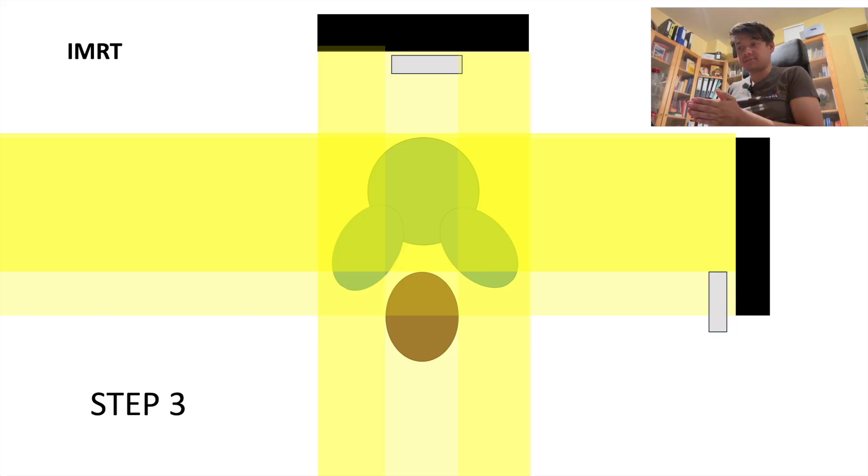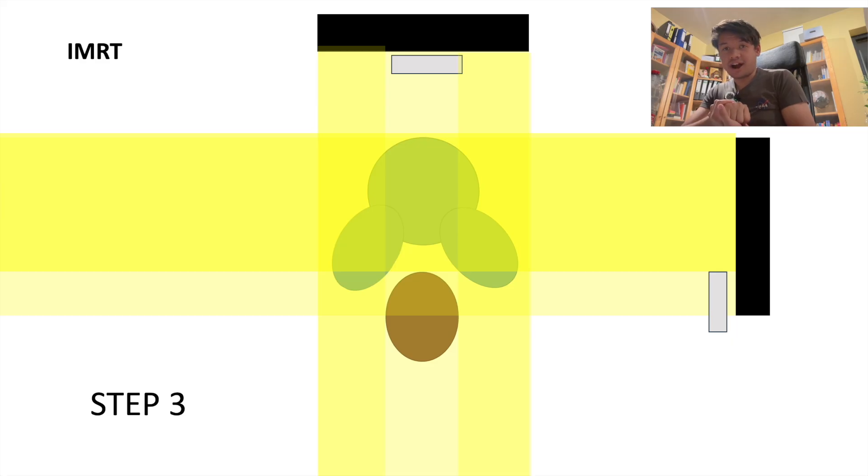In this example, I am showing only two beams, but in clinical practice, we often use five beams or even more, sometimes nine beams. This concept has also evolved into techniques where irradiation is delivered while the MLCs are moving, known as sliding window IMRT.